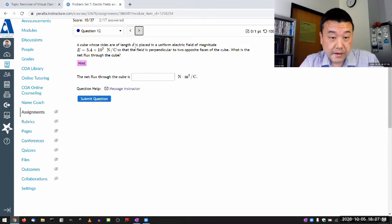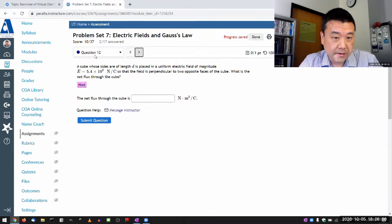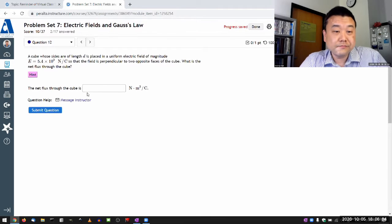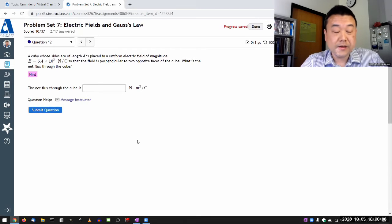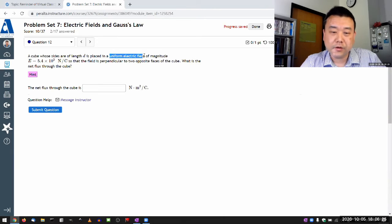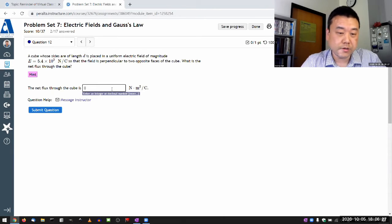Now, question 12 is a little bit more interesting, so let me at least answer that. The answer itself is simple. If you read it, it says a cube whose sides are of length d is placed in a uniform electric field of magnitude, some magnitude. So that field is perpendicular to two opposite faces of the cube. What is the net flux through the cube? The moment you saw the word uniform electric field, your answer should be zero.